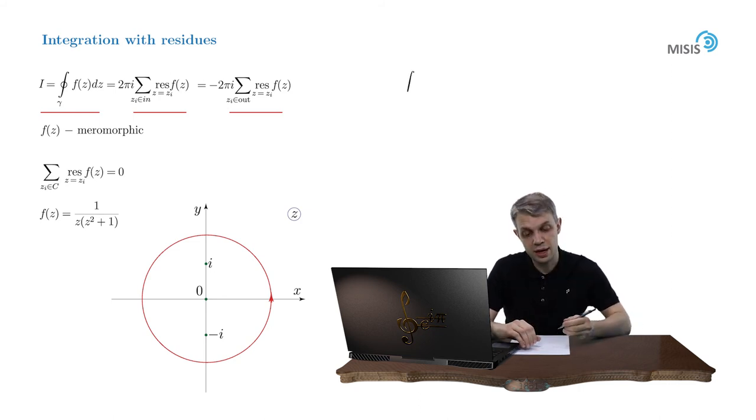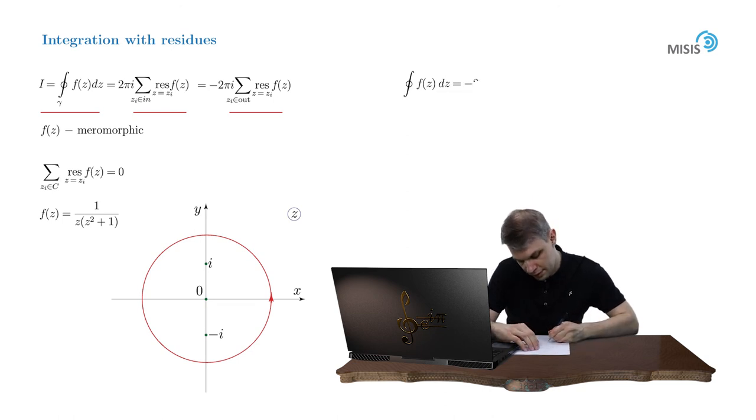And that's why it's way easier to express the same integral as minus 2πi times the sum of the residues outside the contour, because there are none and the only possible residue would be at infinity. So it's equal to minus 2πi times the residue of f(z) at infinity.